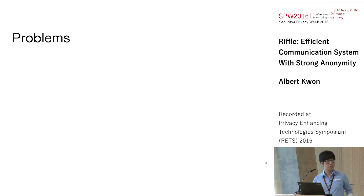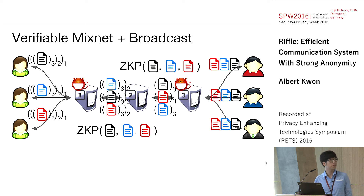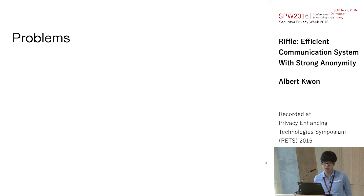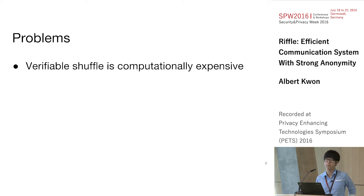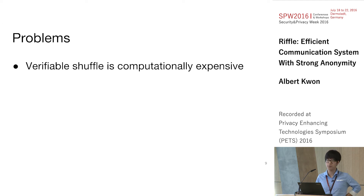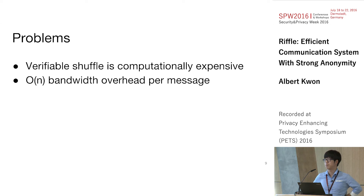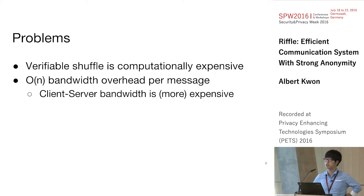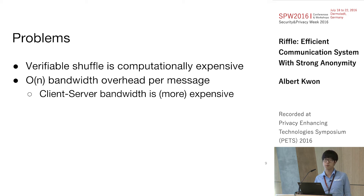This scheme satisfies our security properties and provides both forms of anonymity, but there are two big performance problems. First, verifiable shuffles are very computationally expensive — it takes a couple of minutes to shuffle 100,000 short ciphertexts, such as 128-bit symmetric keys, so we can't use this for any latency-sensitive communication. Second, broadcasting the whole message introduces order-N bandwidth overhead per message, and this is between every client-server pair rather than server-to-server, which is very hard to assume for arbitrary client connections.